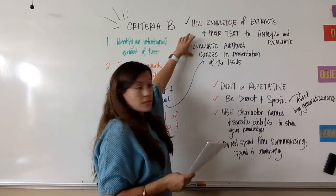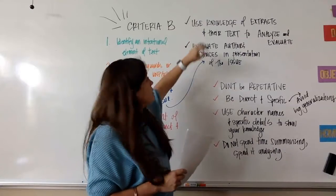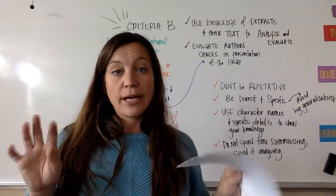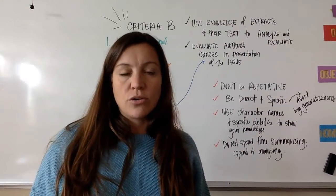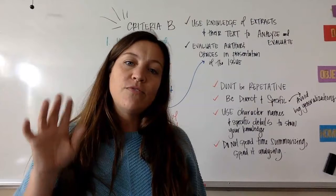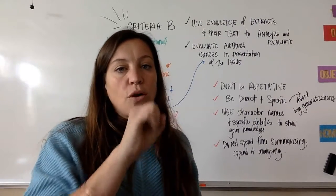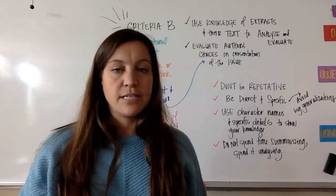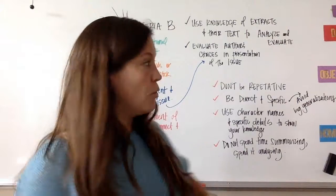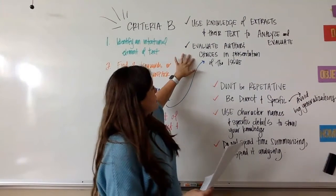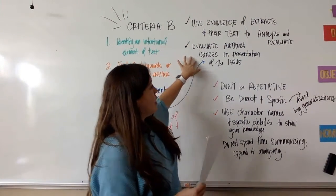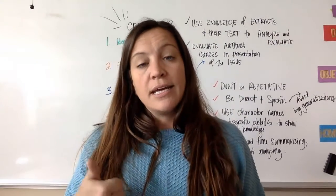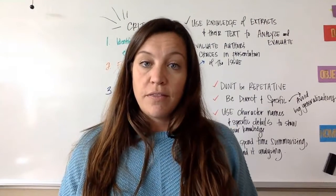These are essentially the two things we need to make sure we do for Criteria B. First, we want to use knowledge of the extracts — show that we understand each extract we picked — but we don't want to summarize or over-explain things. This involves making sure that throughout your IA you are throwing in character names and specific details that allude to your understanding of the text without giving a three-minute synopsis. And secondly, you want to evaluate authors' choices in their presentation of the issue.